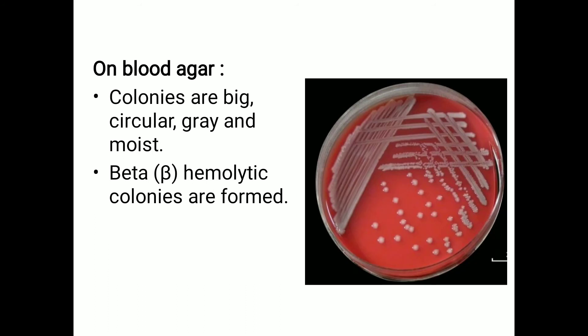Next, we have blood agar. The characteristics produced by E. coli on blood agar are: colonies are big, circular, gray, and moist. They also produce beta-hemolytic colonies on blood agar. We check whether colonies are beta-hemolytic, gamma-hemolytic, or alpha-hemolytic, and in case of E. coli, they produce beta-hemolytic colonies.